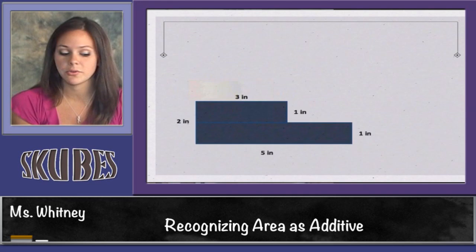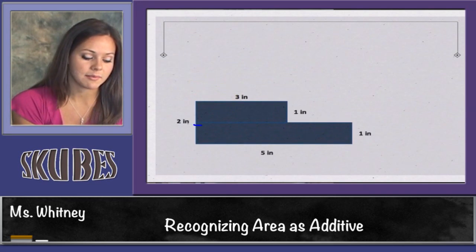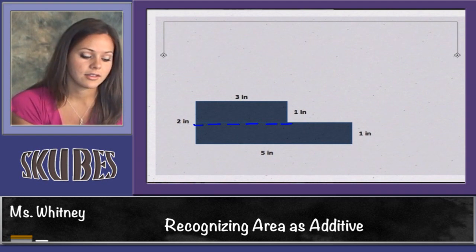Here's another example. I'll take my figure and divide it into two rectangles. To find the area of my first rectangle, I'll multiply 3 times 1 and get 3.